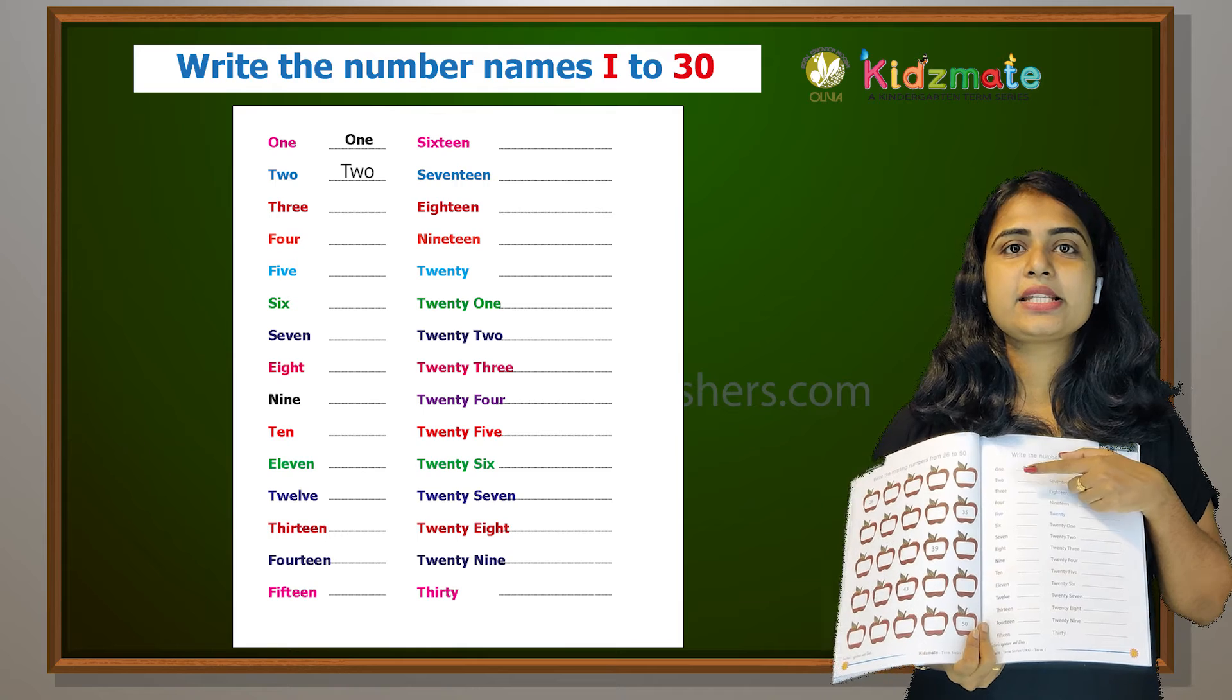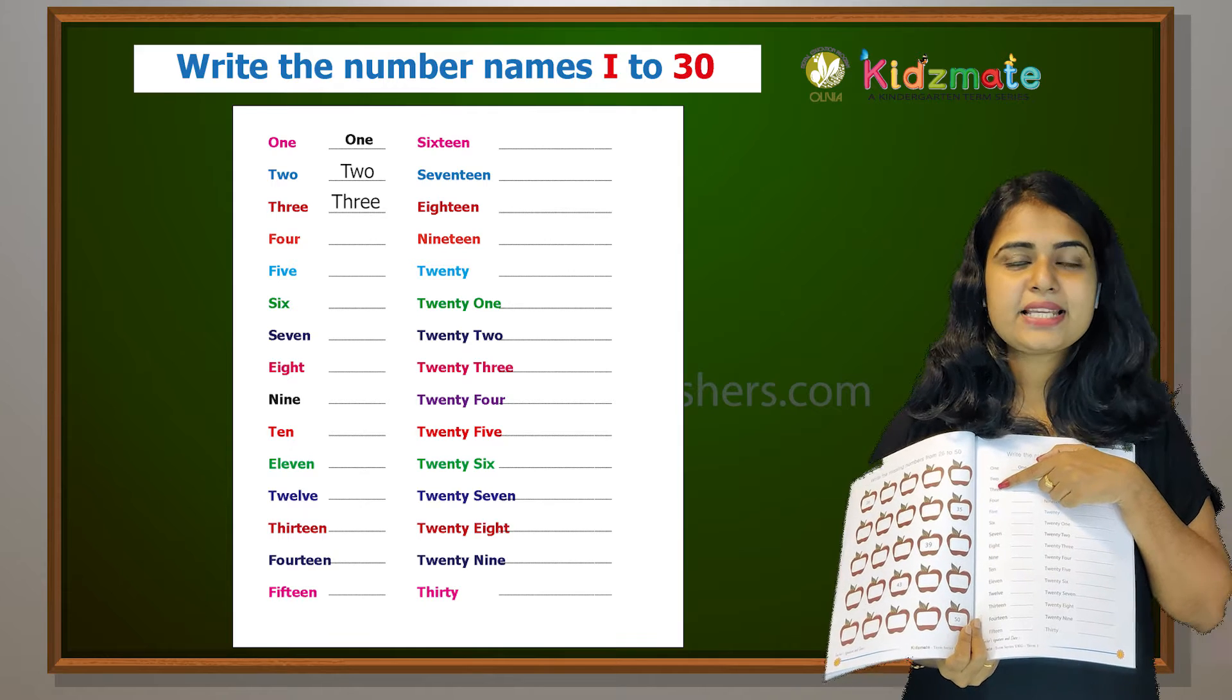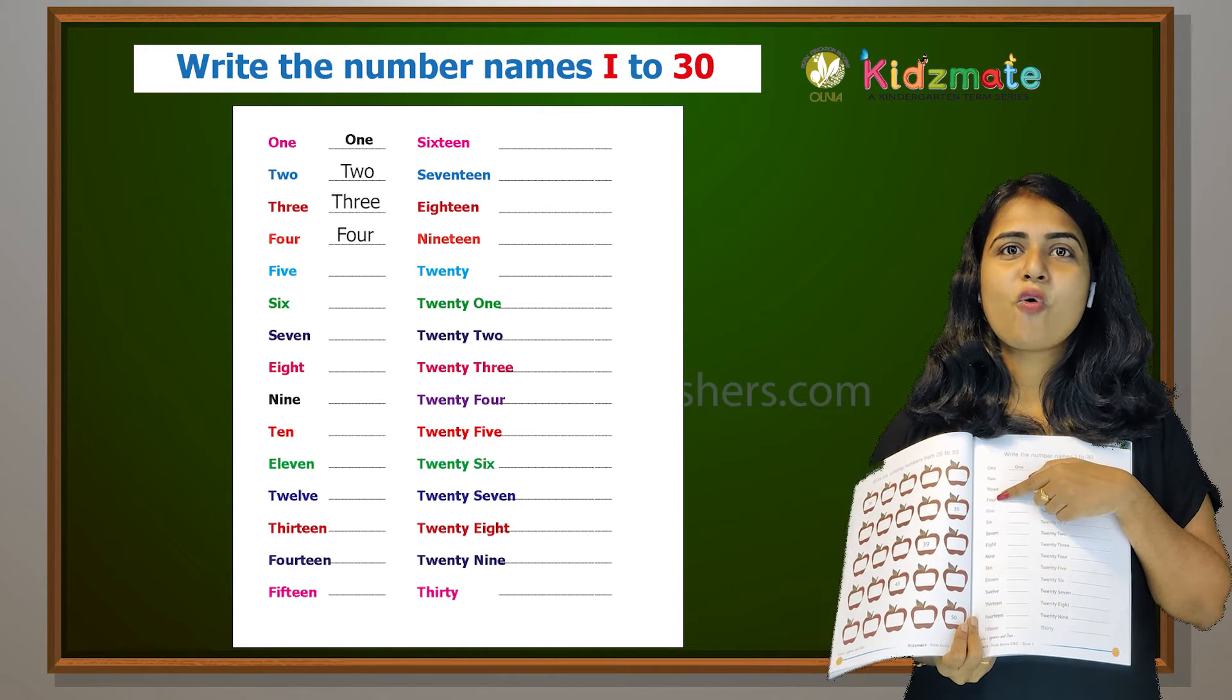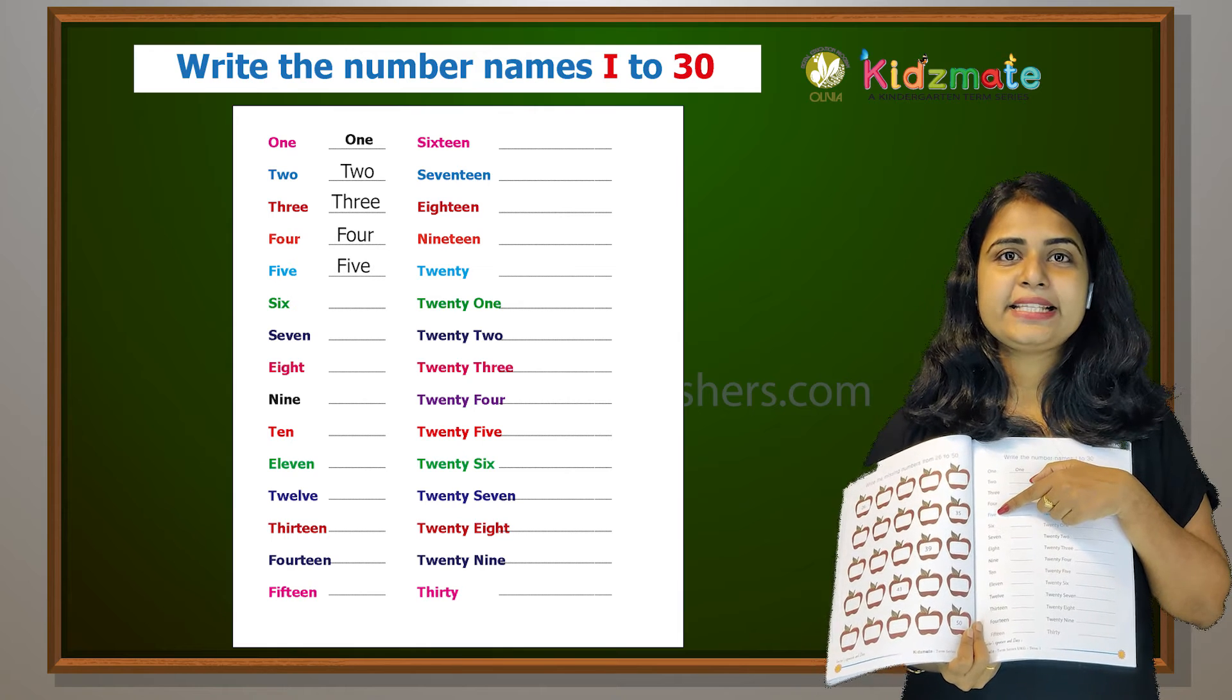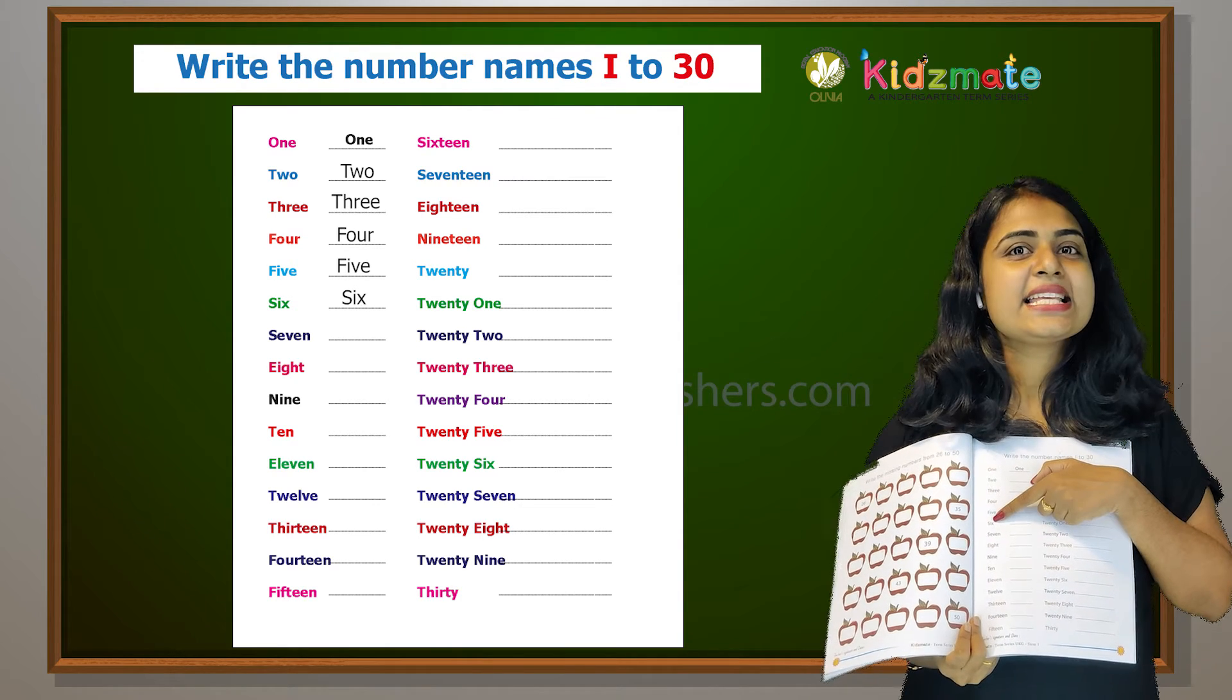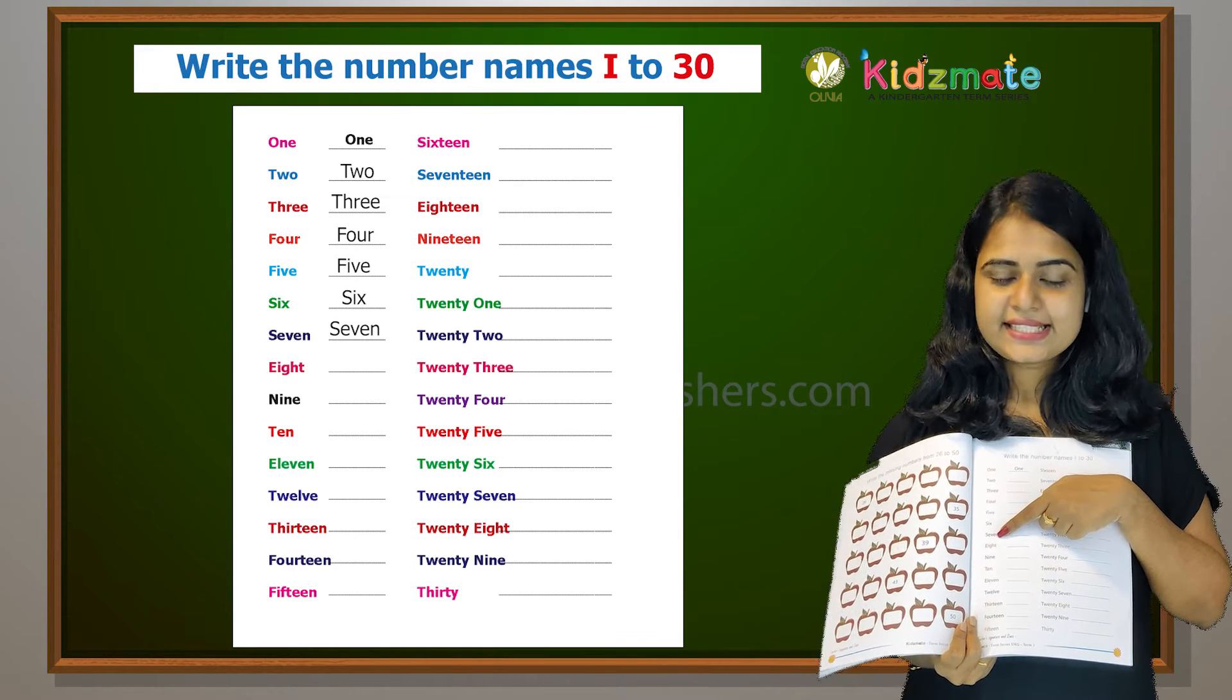Five, F-I-V-E. Six, S-I-X, six. Seven, S-E-V-E-N, seven.